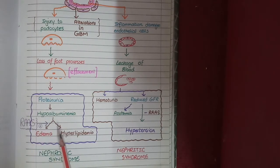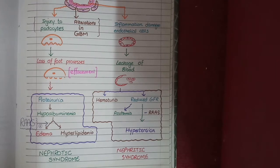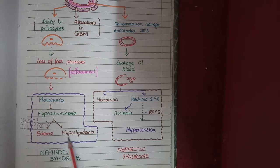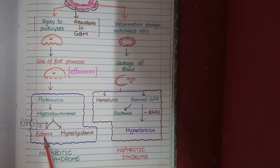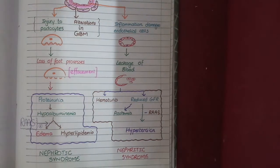Moreover, due to continuous loss of plasma proteins into urine, there is loss of proteins that act as inhibitors of LDL synthesis. As these inhibitory proteins are lost, LDL production increases, causing hyperlipidemia. The constellation of proteinuria, hypoproteinemia, edema, and hyperlipidemia is collectively known as nephrotic syndrome.